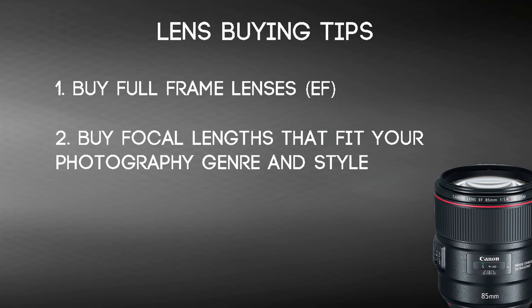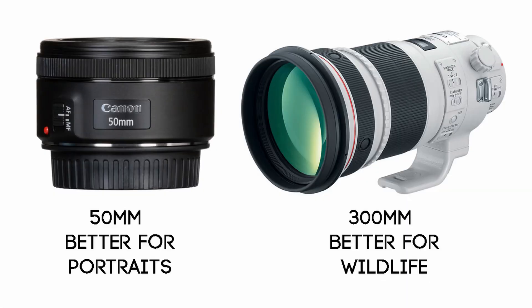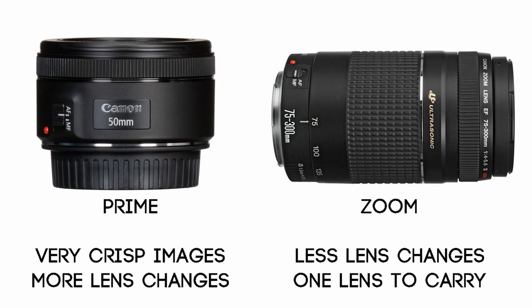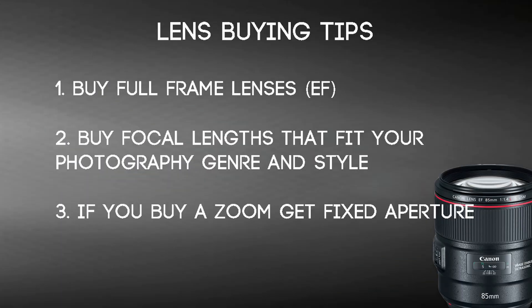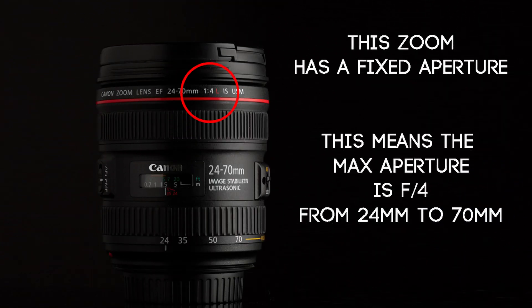Two: carefully choose your focal length so that it fits your photography genre and style. Each focal length has certain subjects that it works best with. Primes are usually better, crisper lenses, but zooms are more versatile — so whether you get a prime or zoom is up to your shooting style. Three: buy fixed aperture lenses when you buy zoom lenses, meaning it has a low F number that stays consistent throughout the zoom instead of a variable range.